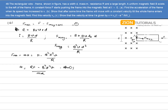In the second part, I have to show that after some time the frame will move with a constant velocity while the entire frame enters into the magnetic field. Clearly, if the frame is moving with constant velocity then acceleration equals zero. Setting acceleration equal to zero: rf equals B²d²v₀, so v₀ equals rf divided by B²d². That is the answer for the second part.